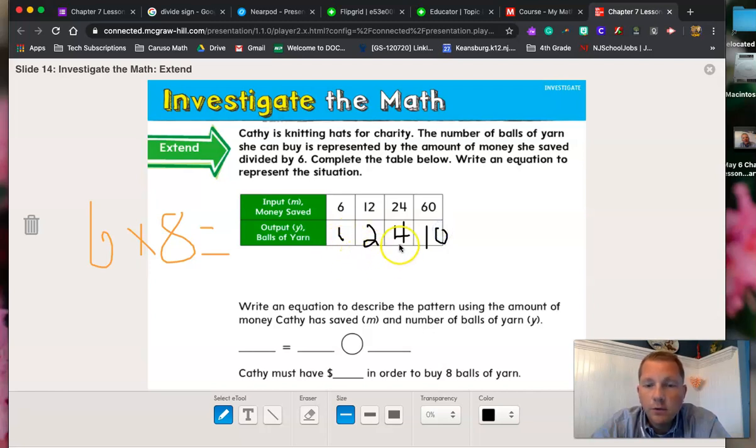Notice that this goes 2, 4, there's something missing, and it goes up to 10. Remember that our equation was Y, our output, equals M, our input, divided by 6. That's a really bad division symbol. Divided by 6.